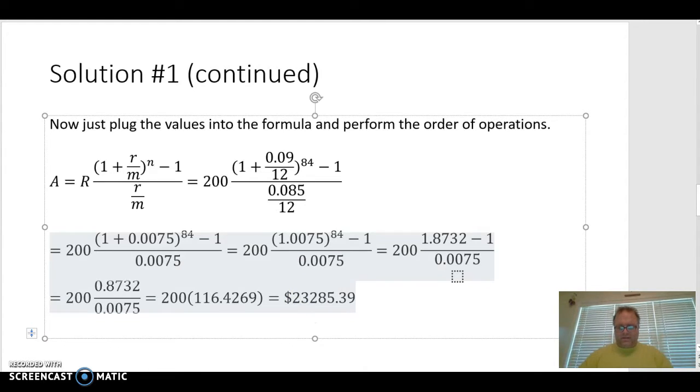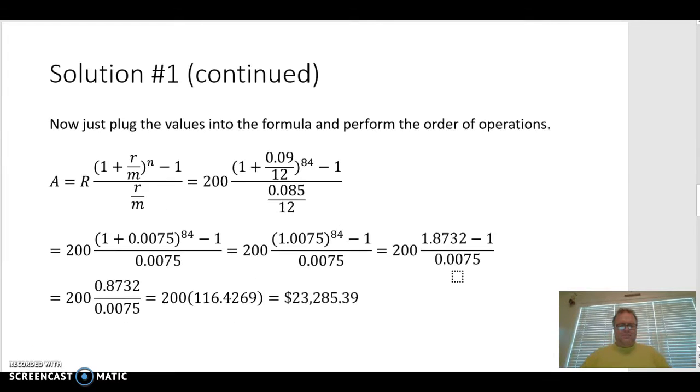And then once you find that, you should get $23,285.39. So let's go back to our initial thing. We remember we said it should be at least $16,800. This is about $6,000 or $7,000 more than that. So that is definitely in the range of our possible answers. So that's what it's going to be, $23,285.39.